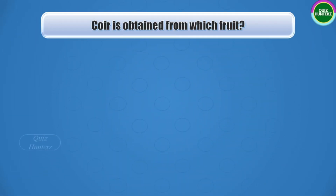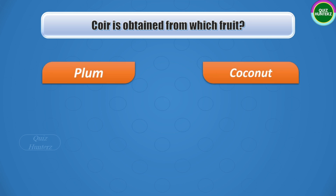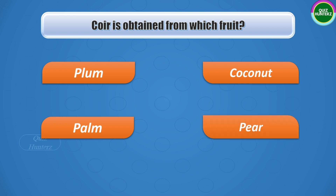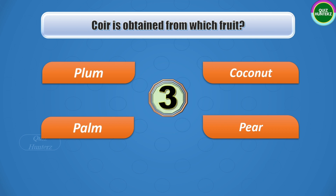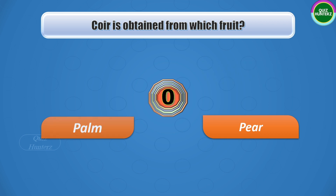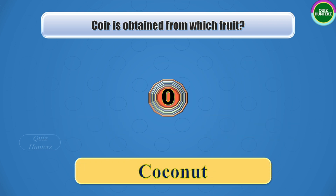Next question: coir is obtained from which fruit? The options are plum, coconut, palm, or pear. Your time starts now. And the correct answer is coconut.